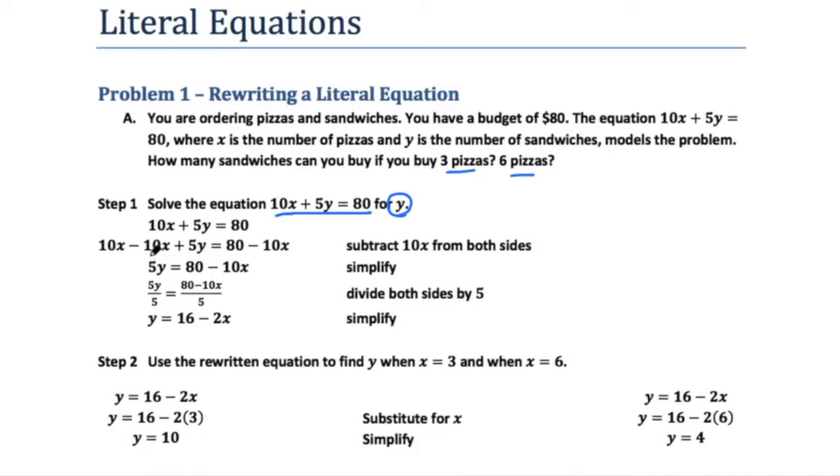So, we're going to go ahead and we're going to subtract 10x from both sides, move it to the other side. We're moving things away from y. And so now we have 5y is equal to 80 minus 10x. Great.